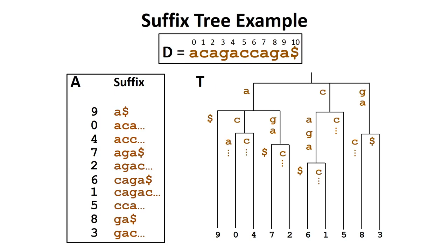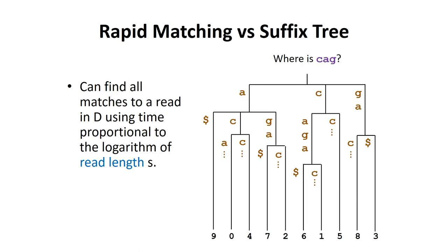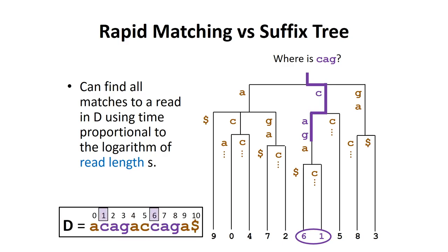After we have created the suffix tree, it now becomes much easier to find all the matches to a read in the database. For example, if we want to find the sequence c, a, g in our database, we simply follow the branches of the tree until we match the entire read and report the positions in the leaves. In this case, positions 1 and 6. The amount of time required to find all matches to a read is proportional to the logarithm of the length of the read and does not depend on the size of the database.